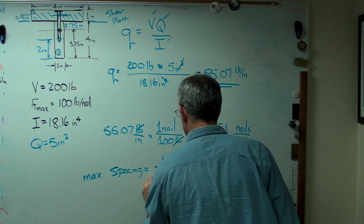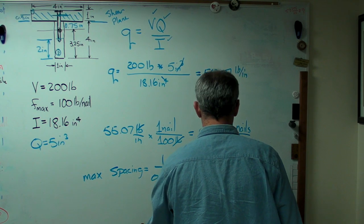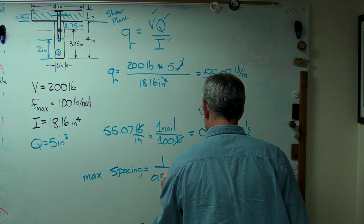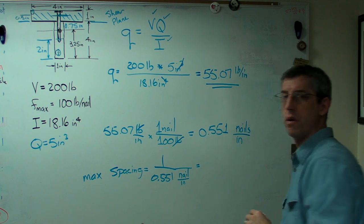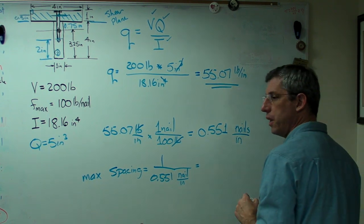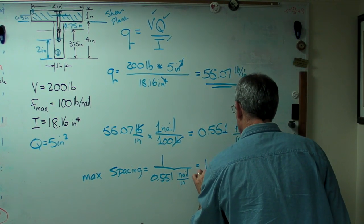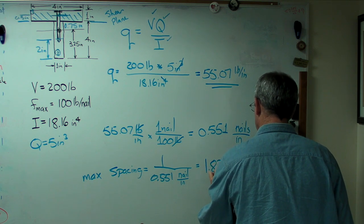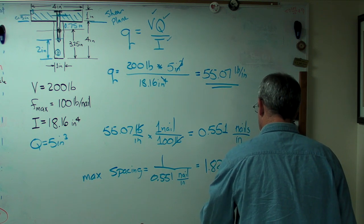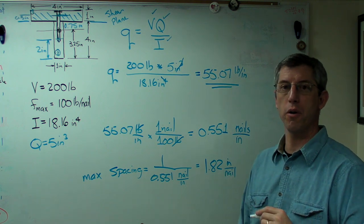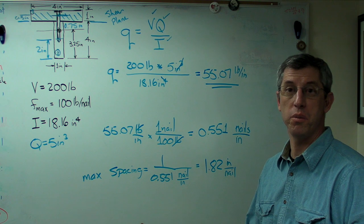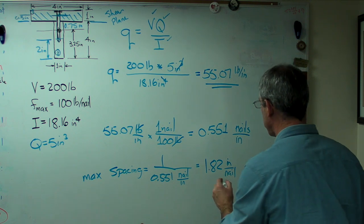It's 1 over 0.551 nails per inch. And if you work that out, you get 1.82 inches per nail. It can't be any farther apart than 1.82 inches. So you might want to play it safe and maybe put them an inch and a half apart. There you go.